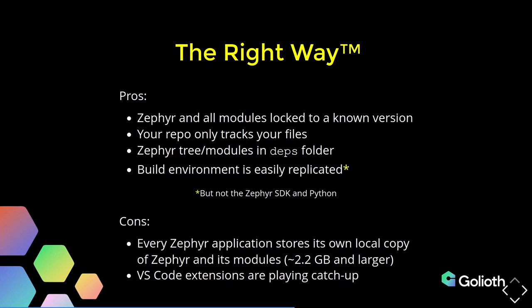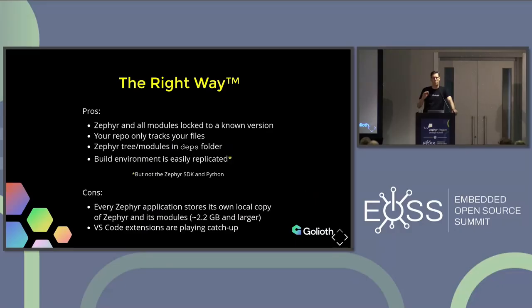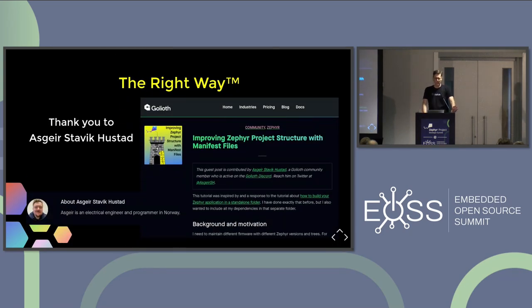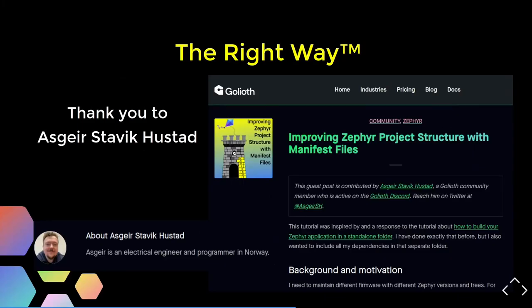VS Code is kind of playing catch up on this. Our partners at Nordic and NXP are both working on really great tools for working with Zephyr in VS Code, but neither of them work well with this project manifest approach — like how do you pull in the project manifest and tell it that Zephyr is in the deps folder? They're aware of the problem and working on it, and I think we'll see support for that soon. If you're interested in Zephyr tools in VS Code, Goliath's CEO and founder Jonathan Berry is doing a talk tomorrow on those tools. I'd also like to thank Asgir Stavik-Hustad, who pointed us toward using manifest files for projects — it really changed the direction of what we're doing and made things a lot better.